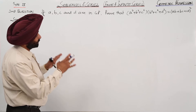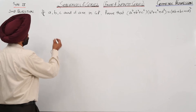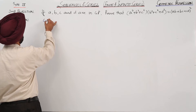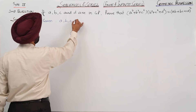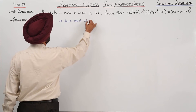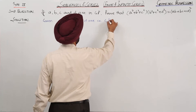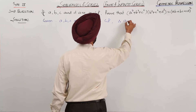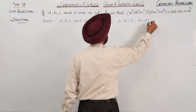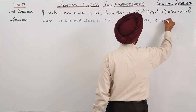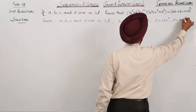Again, we have to prove left hand side is equal to right hand side when A, B, C and D are in GP. Given A, B, C and D are in GP, therefore A will be A, B is the second term AR, C is equal to AR square and D is equal to AR cube.